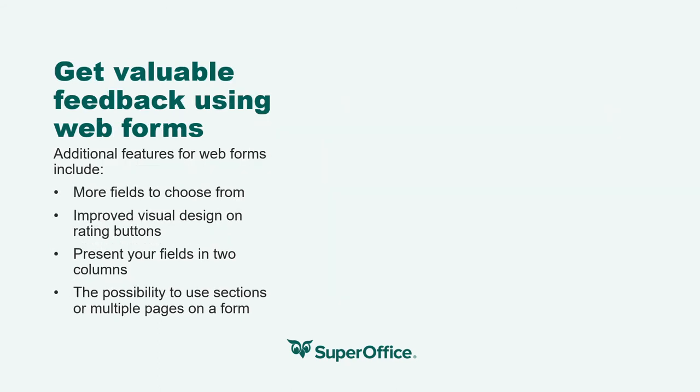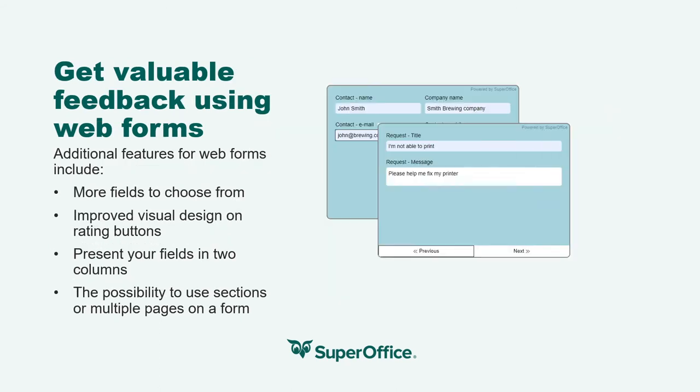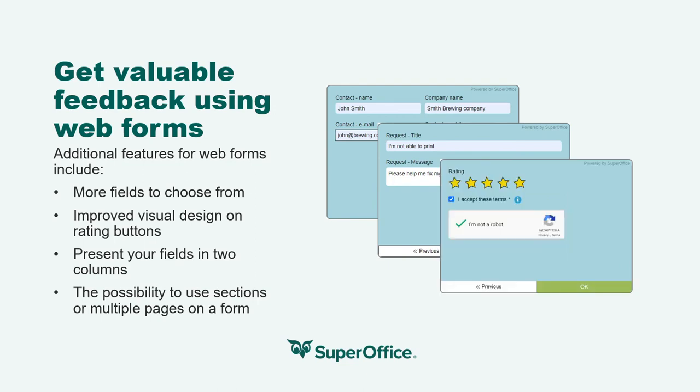There's also been a range of smaller but still very valuable improvements added to our online forms feature over the last few months. For example, you can now choose even more fields, with improved visual design on rating buttons. You can present your fields in two columns, use sections or multiple pages on a web form — similarly to online surveys. And we're currently working on new ways to publish your web forms as well.